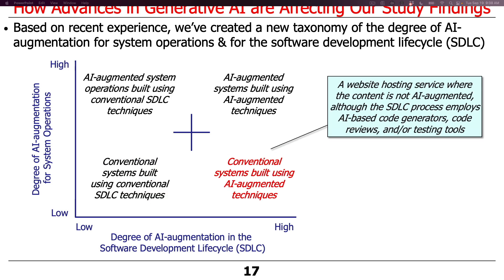Another quadrant involves using AI-augmented tools to build conventional systems. For example, you might host a website and deliver content, but use AI-based code generators — perhaps generating code using ChatGPT or integrated development environments like IntelliJ or Android Studio that use AI to help generate or comment code. You might also do code reviews with AI-augmented tools, or use AI-generated unit tests and regression tests.